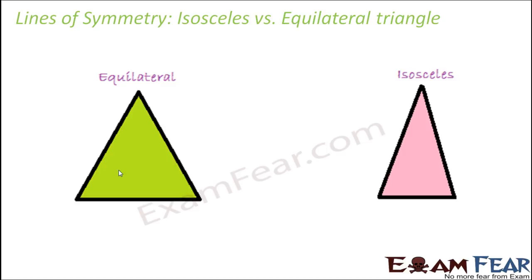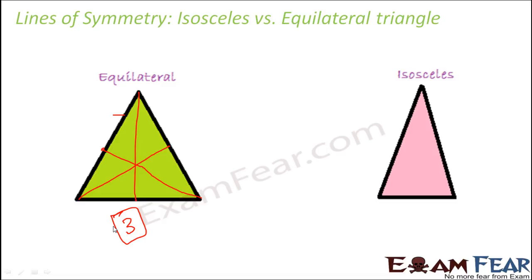Let us compare the lines of symmetry in an equilateral triangle with those of an isosceles triangle. In an equilateral triangle, all sides are equal, so you have three lines of symmetry — a line drawn from any vertex to the midpoint of the opposite side is a line of symmetry. But in an isosceles triangle, the line drawn from the vertex to the midpoint of the base — where the two equal sides meet — creates two identical halves, so that is a line of symmetry. However, a line drawn from another vertex to the midpoint of a different side produces two non-identical halves, so it does not act as a line of symmetry. Therefore, an isosceles triangle has only one line of symmetry.